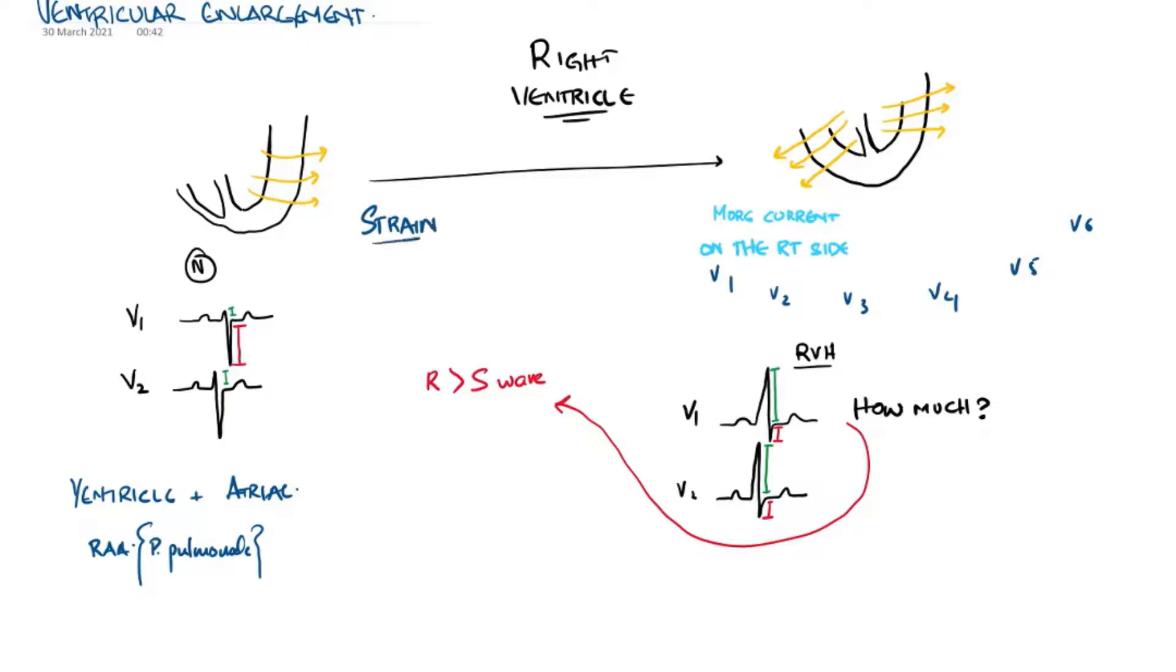Now strain is another terminology which shows that the ventricle is under pressure, it's under strain. How do you see strain? Well, it's ST depression with an asymmetric T wave inversion. So let's draw strain pattern. So you have a P wave, QRS complex, and then ST depression and then asymmetric T wave inversion.